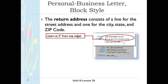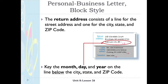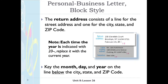At the bottom of the address, you can put the month, day, and year on the line below the city, state, and zip code. So for example: 230 Glendale Court, Brooklyn, New York, with a zip code, and then February 15th, 2020.